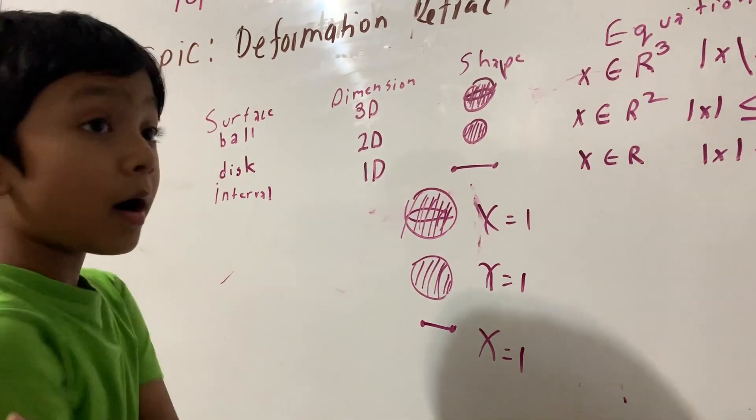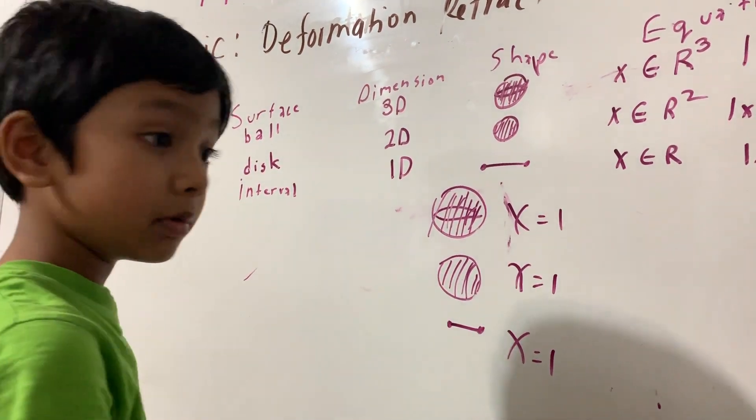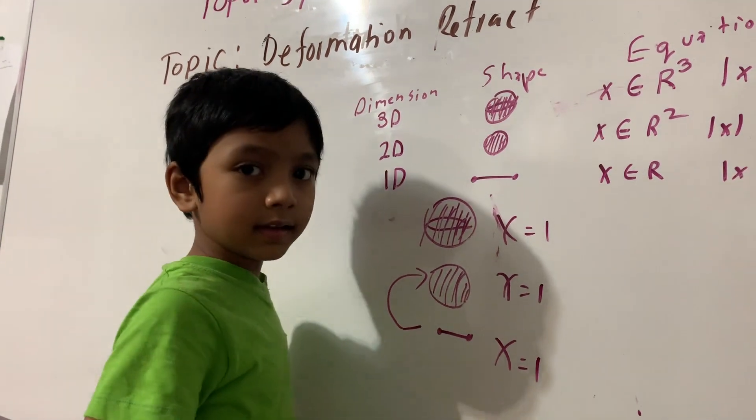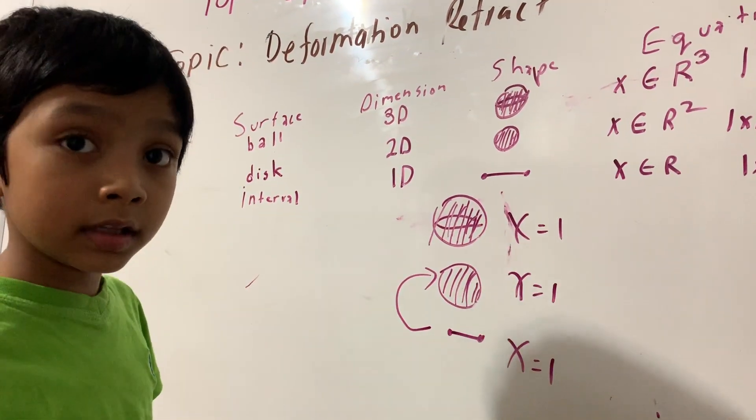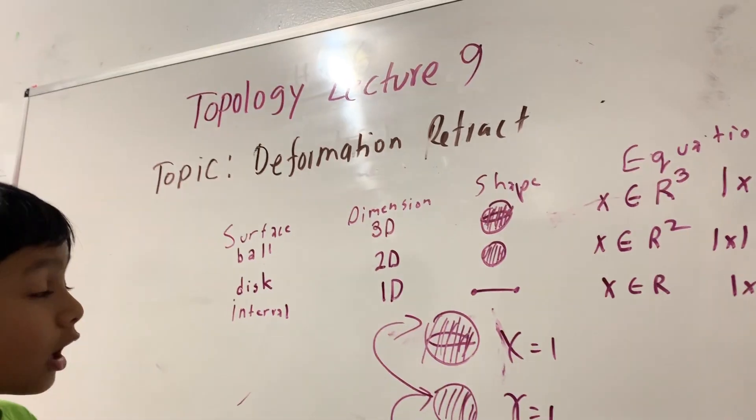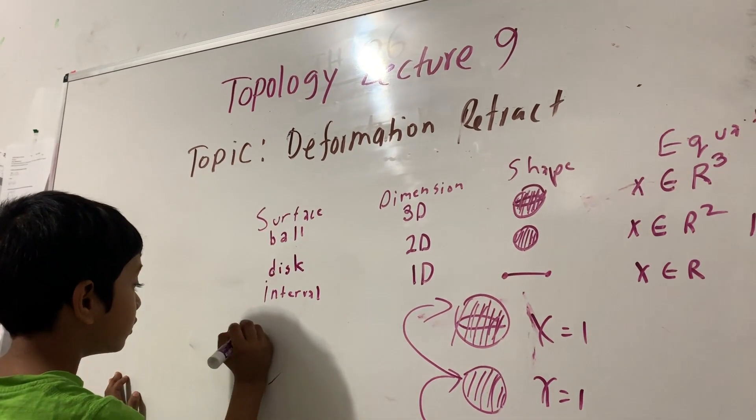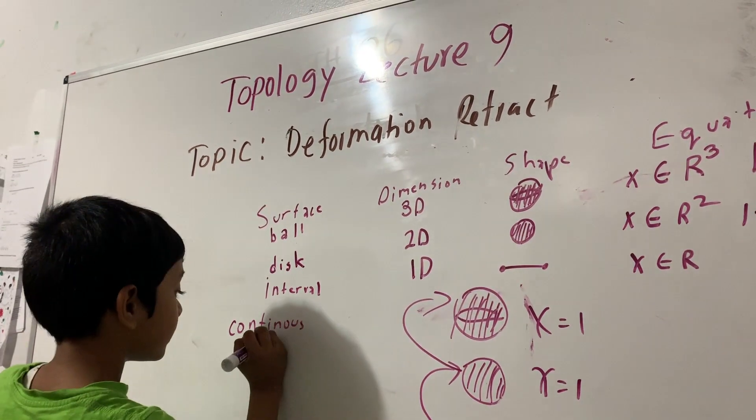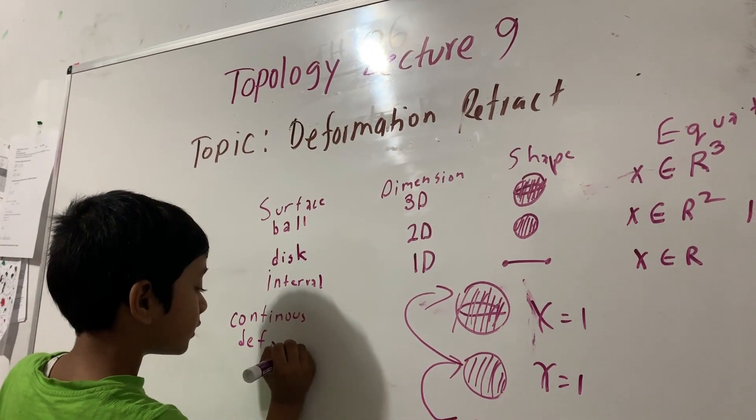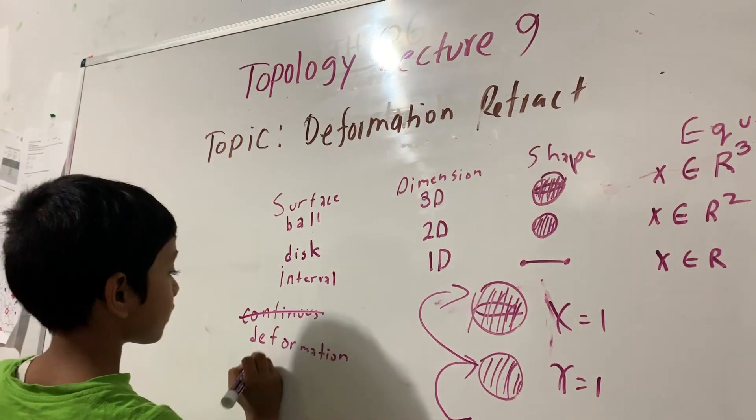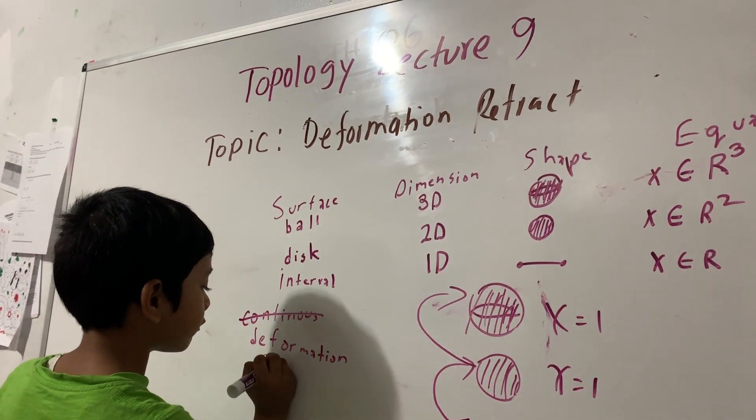However, they're topologically not the same, because changing this to this, it changes its topology. Changing this to this is not called continuous deformation. Yes, this is called a deformation retract.